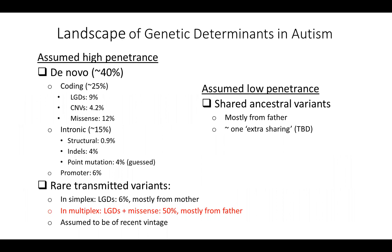Beyond novel coding observations, we and others just finished major analyses of whole genome sequence data, which now gives us a view on non-coding variants. Through our efforts, we were able to estimate the role of non-coding variants. If coding variants contribute to about 25% of autism cases, intronic variants contribute about 15%, and promoter region variants contribute an additional 6%. In total, we estimate we can account for about 40% of autism cases being due to novel mutations, either coding or non-coding.